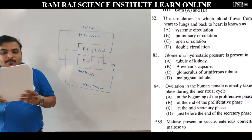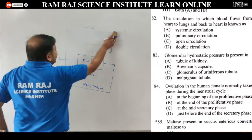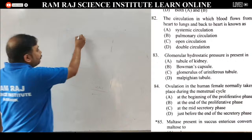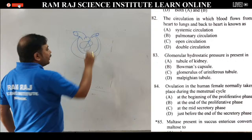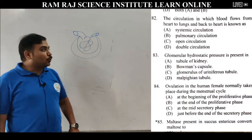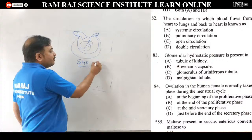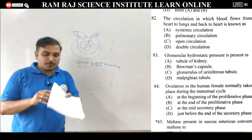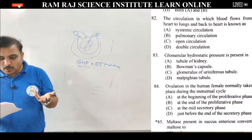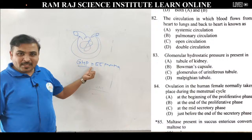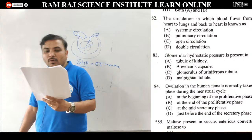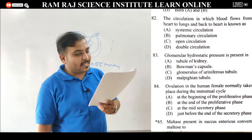Question 83: glomerular hydrostatic pressure is present in. Bowman's capsule में afferent arteriole का diameter बड़ा होता है और efferent arteriole का diameter छोटा होता है. इसकी वज़ह से glomerulus में एक pressure develop होता है जिसको glomerular hydrostatic pressure बोलते हैं — approximately 55 mm of Hg. नाम में ही answer है — यह glomerulus में होता है. Answer is option C — glomerulus of uriniferous tubule (nephron).